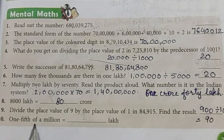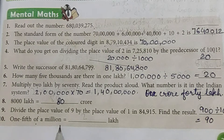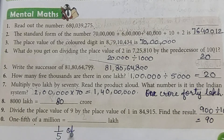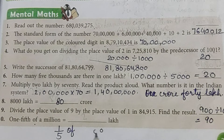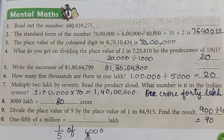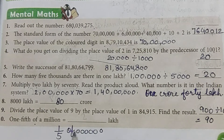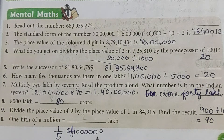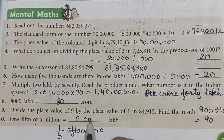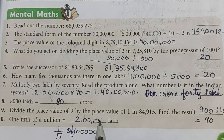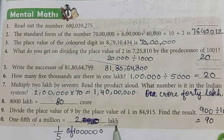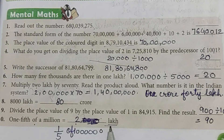Question: Find one-fifth of a million. Going through the place values — ones, tens, hundreds, thousands, ten thousands, one hundred thousands, one million — if we divide one million by five, we get two lakh. So the answer is two lakh.